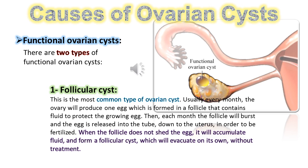Causes of ovarian cysts — functional ovarian cysts: there are two types. Follicular cysts are the most common type. Usually every month the ovary produces one egg formed in a follicle that contains fluid to protect the growing egg. Each month the follicle passes and the egg is released into the tube down to the uterus to be fertilized. When the follicle does not shed the egg, it accumulates fluid and forms a follicular cyst, which will evacuate on its own without treatment.